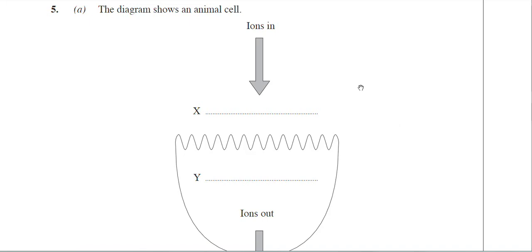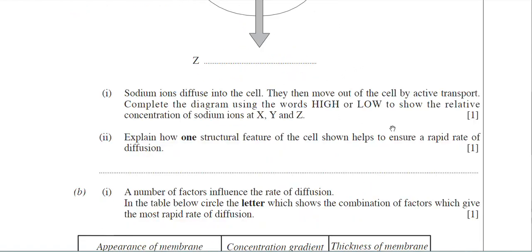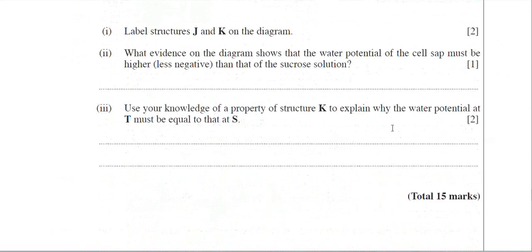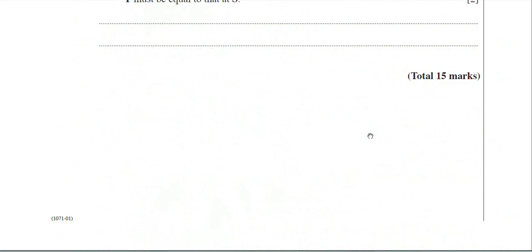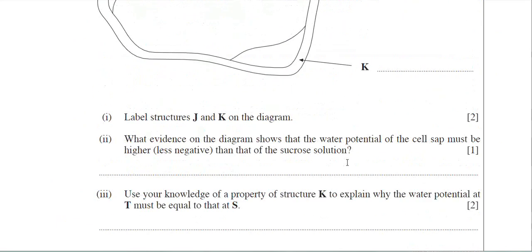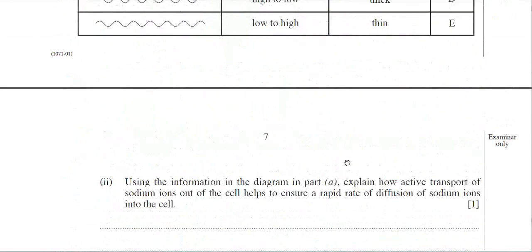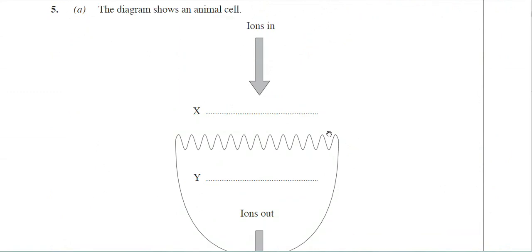We're on to question 5 in the January 2009 BY-1 paper. This question 5 is quite a long question. Let's scroll down and see the total number of marks: 15 marks. That is a lot of marks for one question. This question is all about membrane transport — different types of membrane transport, not just one type.